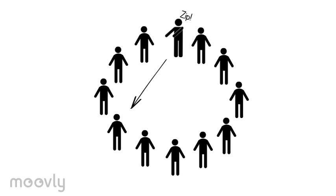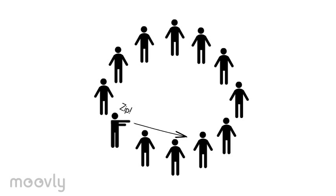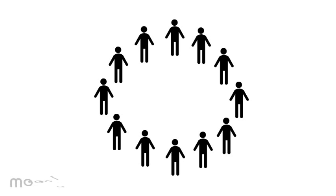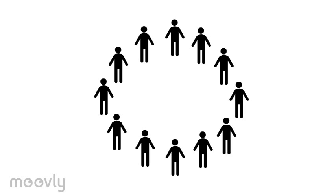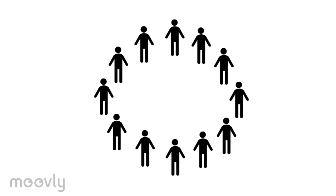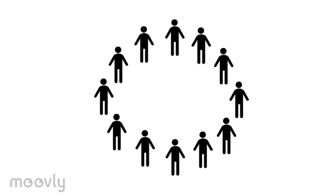The one that has received the zip now passes it on to the next person in the circle. This person stretches their arms directly to the participant they want to pass it on to and says zip again to give someone else the turn. It's important that everyone pays close attention so that no one unknowingly gets the turn and slows down the exercise. Let the team practice until they can zip smoothly.